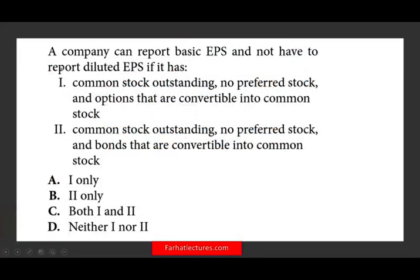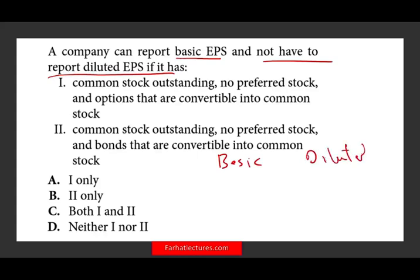Let's take a look at the first question. A company can report basic EPS but does not have to report diluted EPS. We have two types of EPS — basic and diluted — and you need to know the rules. When do we report only basic, and when must we report diluted? Simply put, if we have a simple capital structure, we only report basic. If we have a complex capital structure, we must report both basic and diluted.